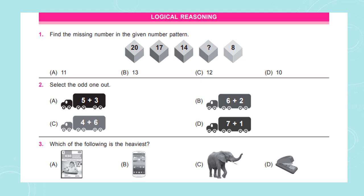Question number 2: Select the odd one out. Option A: 5 + 3, Option B: 6 + 2, Option C: 4 + 6, Option D: 7 + 1. Question number 3: Which of the following is the heaviest? Option A is a picture of an ICSO Olympiad book, Option B is a picture of a smartphone, Option C is a picture of an elephant, Option D is a picture of a staple.